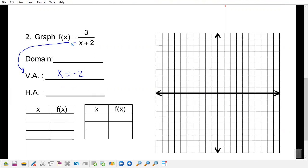First, I'm going to identify my vertical asymptote, and where is it at? X equals negative two. Then we're going to identify our horizontal asymptote. We have a degree of one, degree of zero. What does that mean? Y equals zero, right. When the numerator is less than the denominator, y is equal to zero.